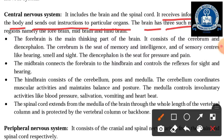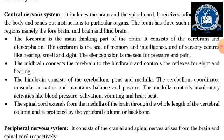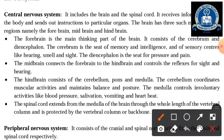The brain has three main parts: forebrain, midbrain, and hindbrain. The forebrain is the main thinking part of the brain, which helps to think about anything. It contains the cerebrum and diencephalon. The cerebrum is the seat of memory and intelligence.